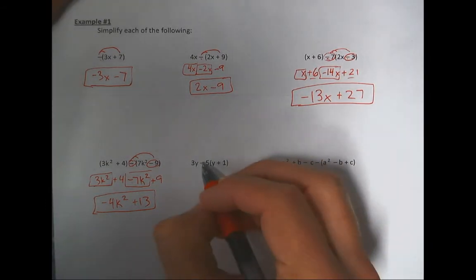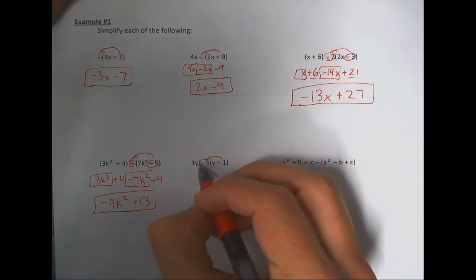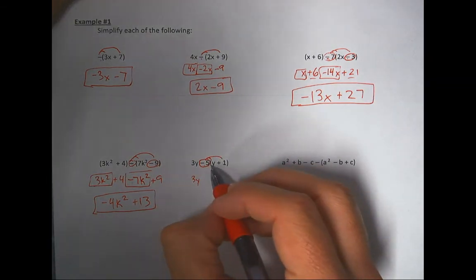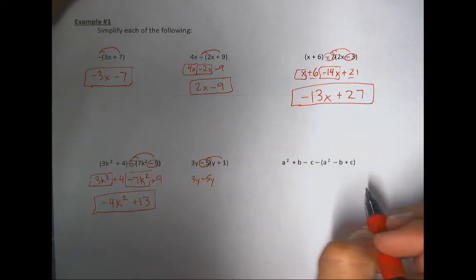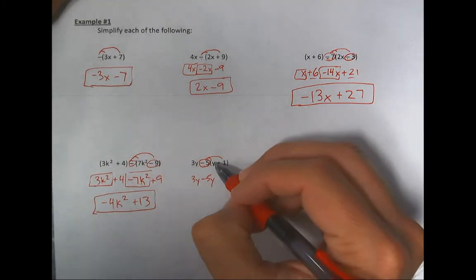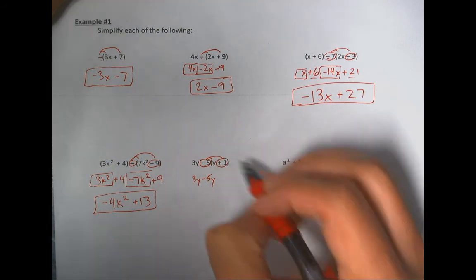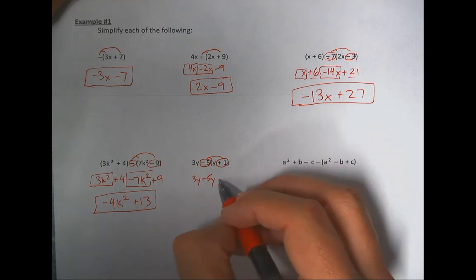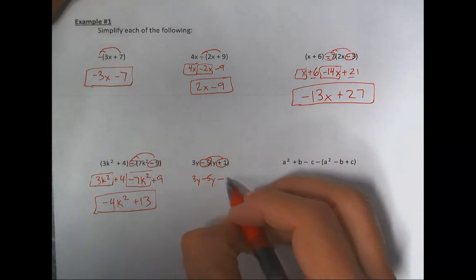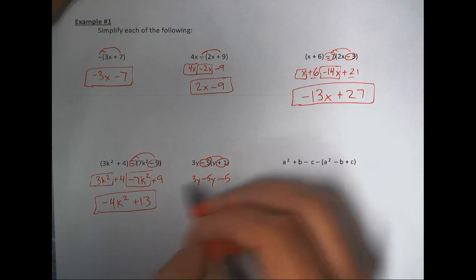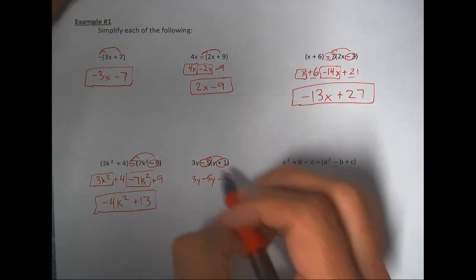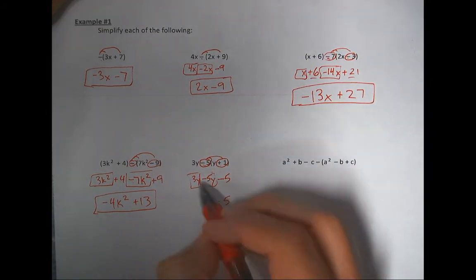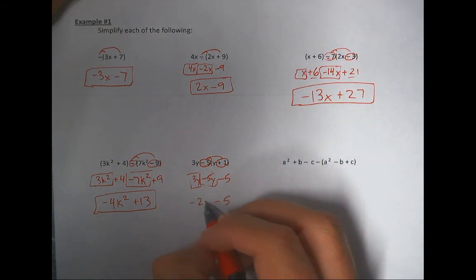Next problem: distributing a negative 5. Circle it to make sure you see the negative. The 3y just hangs out — negative 5 times y is negative 5y. Don't 'drop down' the next term: it's negative 5 times positive 1, which creates negative 5, not positive. Combining the y terms: 3y minus 5y is negative 2y, and minus 5 stays.